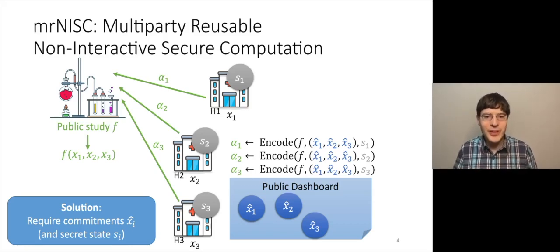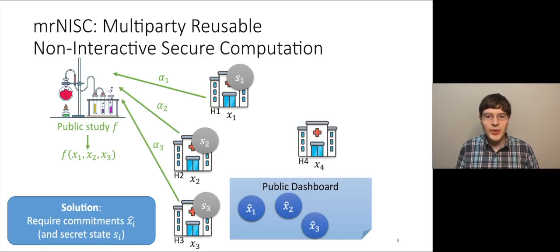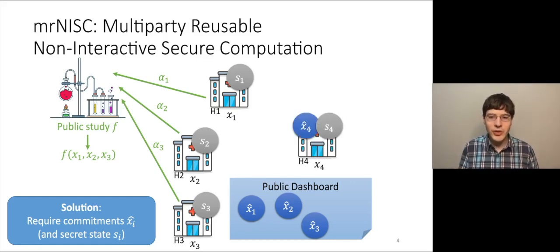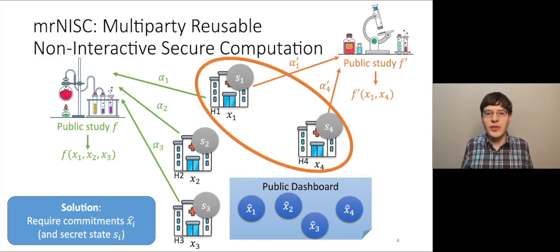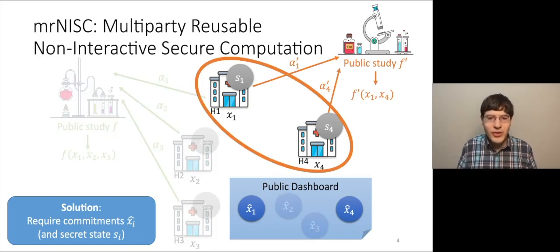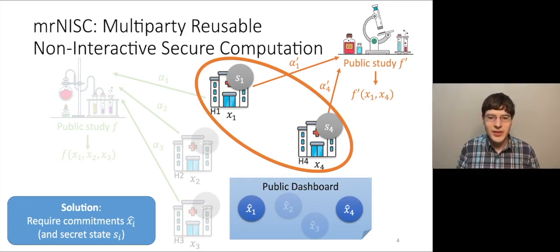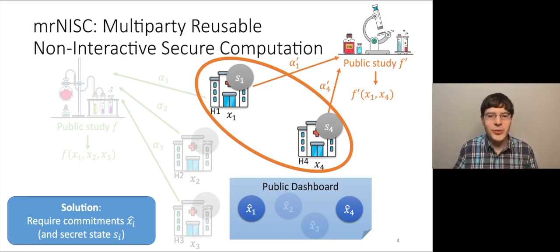We still want to keep the flexibility we had before: any hospital can join at any time by just making a commitment, keeping the secret state, and publishing the commitment. A new study can then be conducted between, for example, Hospital 1 and newcomer Hospital 4. Importantly, the computation encodings alpha1 and alpha4 only depend on the commitments of the parties involved in the study — X-hat-1 and X-hat-4 — and should not depend on the commitments X-hat-2 and X-hat-3 of other parties.